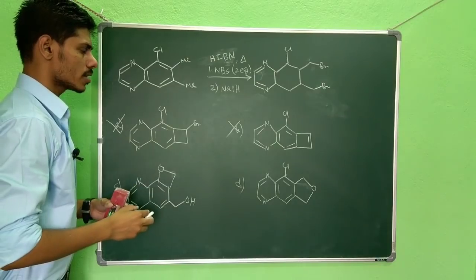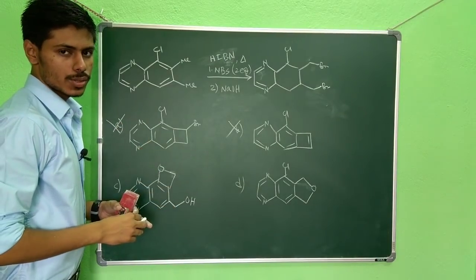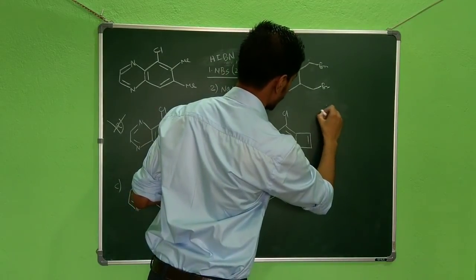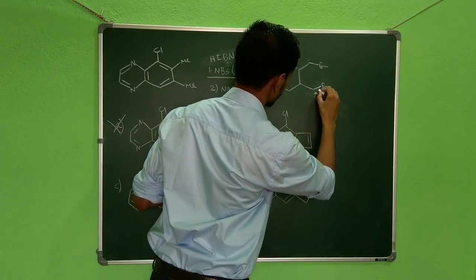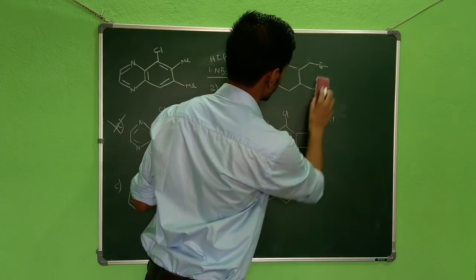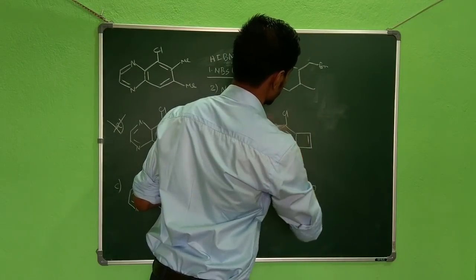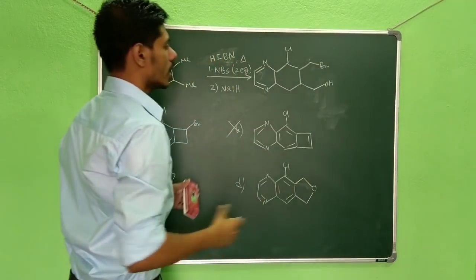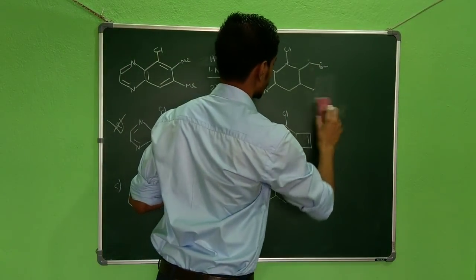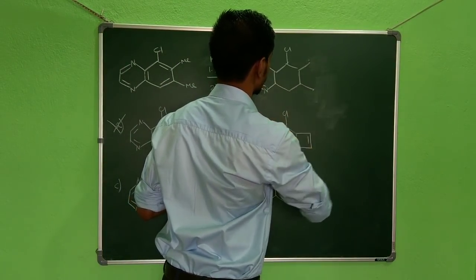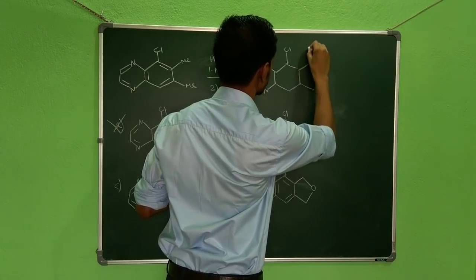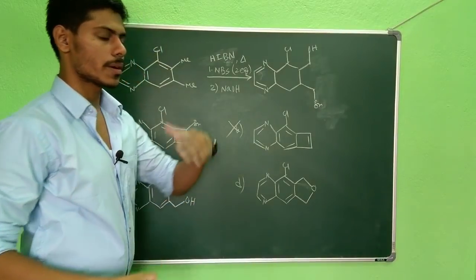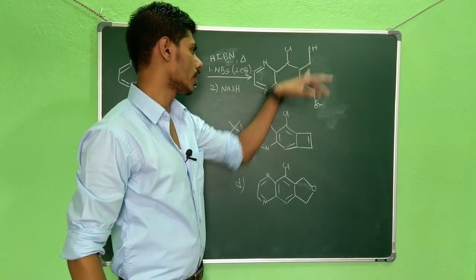Now, what sodium hydroxide can do is it can do SN2 reaction. So if sodium hydroxide does SN2 reaction over here, what it will make—it will make this CH2OH. Or if the reaction happens over here, then it will make it will be here. So either the sodium hydroxide attack can take place over here or here.